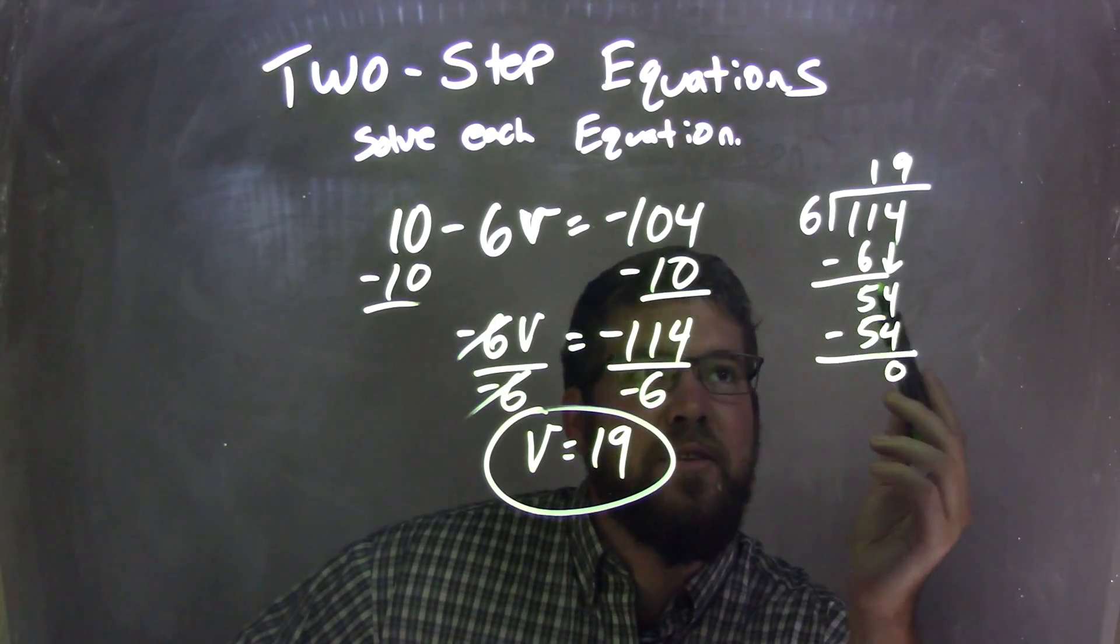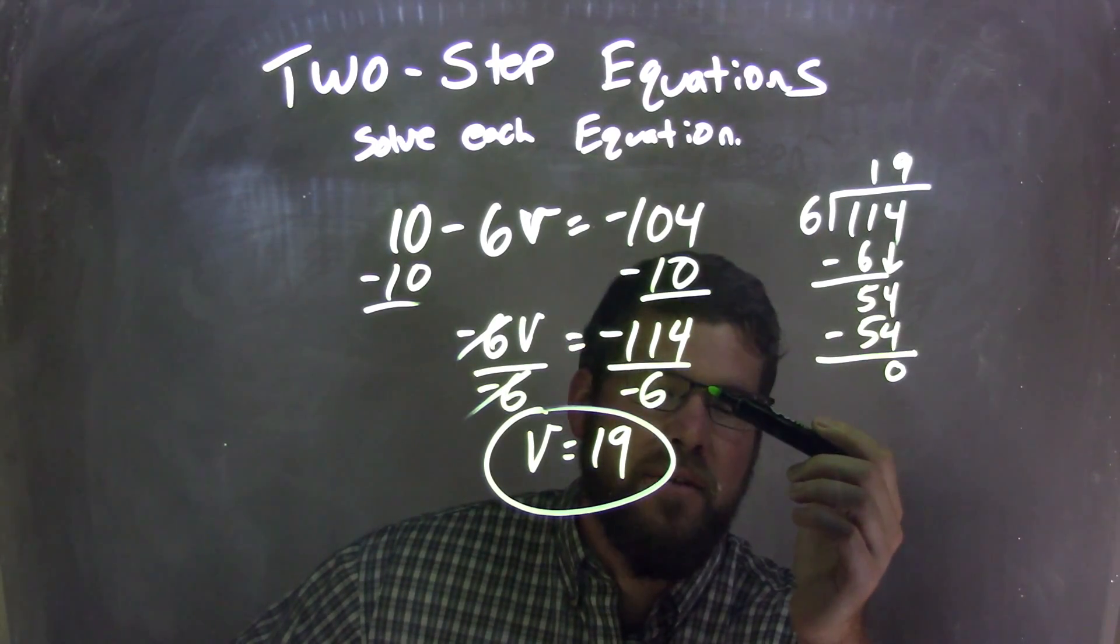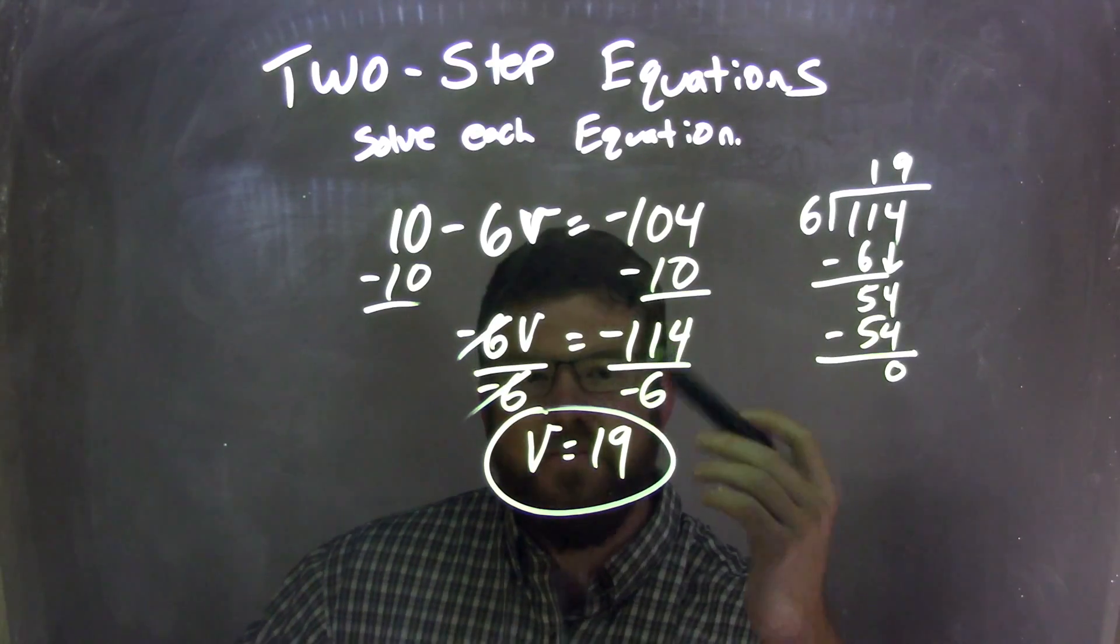I used long division, and I got 6 goes into 114, 19 times, and I knew that a negative divided by negative is a positive. And so my final answer here is V equals 19. Thank you very much.